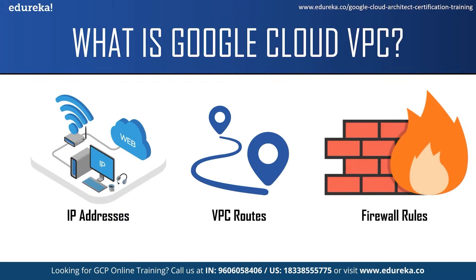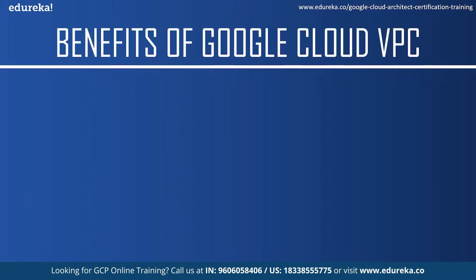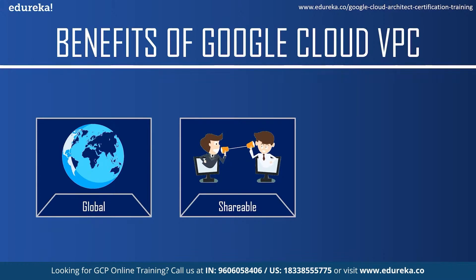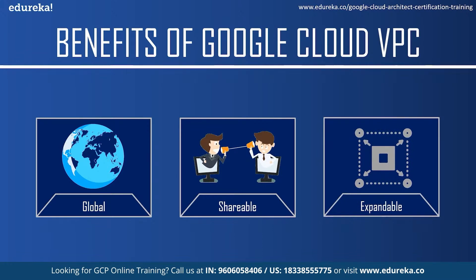Now let us see some of the benefits of Google Cloud VPC. First, it is global — using a VPC gives you managed global networking functionality for all your Google Cloud resources through subnets hosted on Google Cloud data centers. A single Google Cloud VPC and its subnets can span across multiple regions without ever connecting to the public internet, remaining isolated from the outside world. Second, it is shareable — an entire organization can use one VPC and share it across various teams. Different teams can be isolated within projects with different billing and quotas, yet still maintain a shared private IP space. Third, it is expandable — Google Cloud VPC lets you increase the IP space of any subnet without any workload shutdown or downtime.